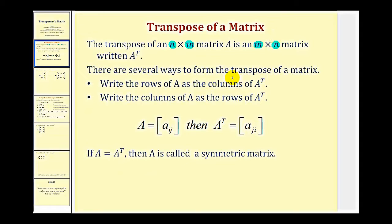There are several ways to form the transpose of a matrix. One way is to write the rows of matrix A as the columns of the transposed matrix, or we can write the columns of matrix A as the rows of the transpose. We can also express this using index notation: elements with row i, column j in matrix A become row j, column i in the transpose.